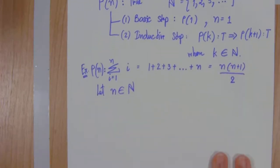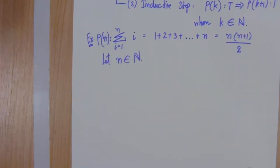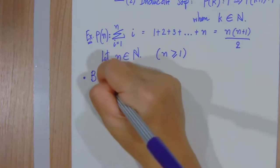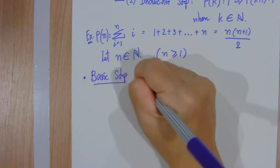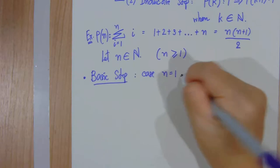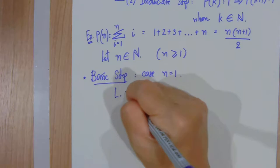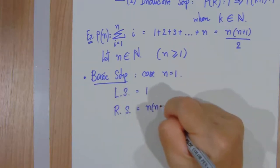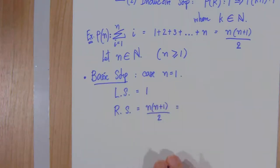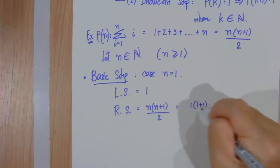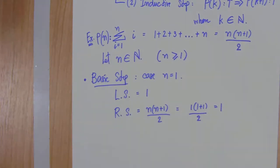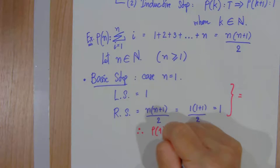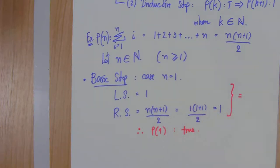We let our sentence P(n) be this statement, where n is any natural number. We start with n beginning from 1, then start with the basic step. For the case n=1, we prove the left-hand side and the right-hand side. The left-hand side equals 1, and the right-hand side: replacing n with 1 in n(n+1)/2 also gives 1. So we can conclude that the sentence at n=1 is always true.